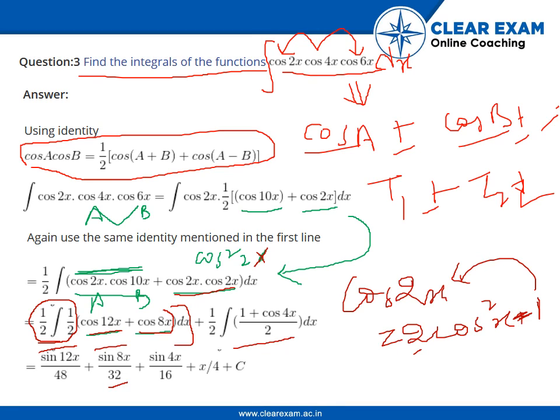In this case, integration of half will be x by 2, but 2 will be multiplied to 2 so we get x by 4. And similarly, integration of cos 4x by 2 will be sin 4x by 8, but this 8 will be multiplied to 2, so we get sin 4x by 16. So that is our final answer.